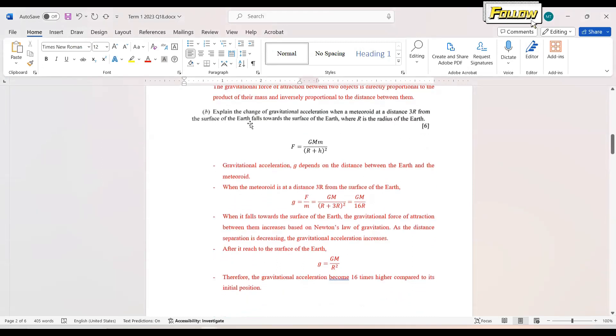Explain the change of gravitational acceleration when a meteorite at a distance 3R from the surface of the Earth falls toward the surface of the Earth, where R is the radius of the Earth. Similar to question 18, where the max is 6 marks, you need to try to give as many points as you can.